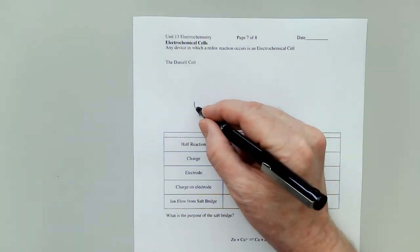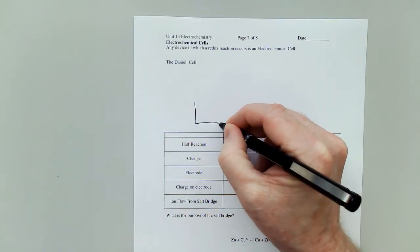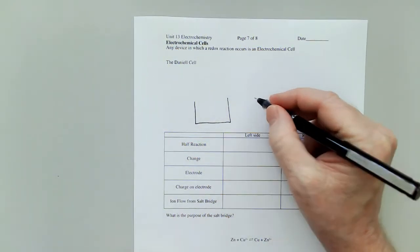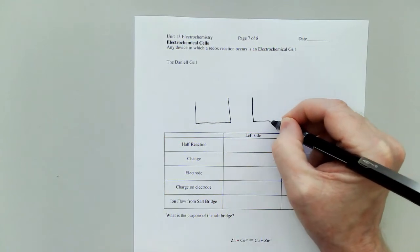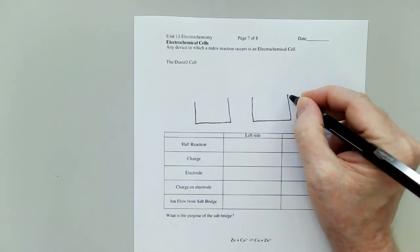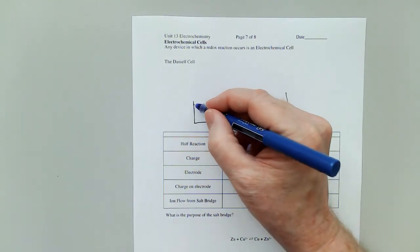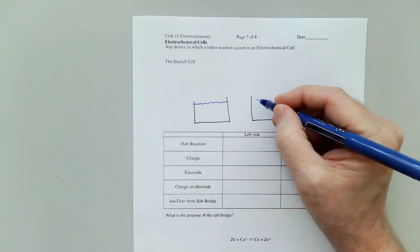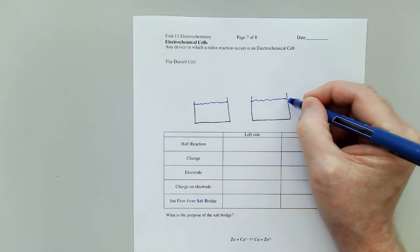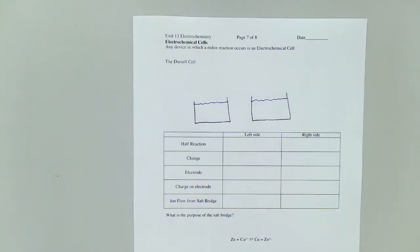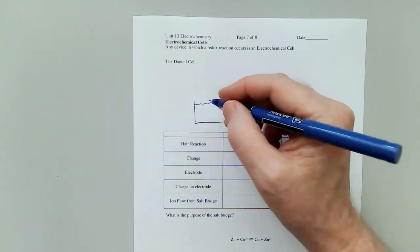So we need two beakers. And the reason we need two is because one is going to be for the oxidation, and one is going to be for the reduction. Now we're going to fill them with a solution. We'll talk about what that solution is in a moment.